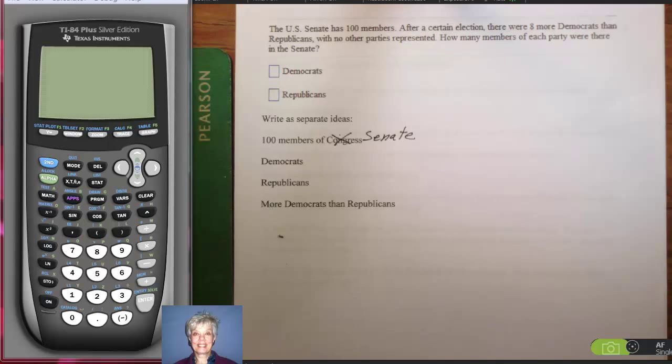And in this case there are more Democrats, eight more than Republicans, and that's how we set it up. 100 members all together and they're divided up into Democrats and Republicans and there are more Democrats than Republicans. That's the whole idea. And we want to know how many of each party there are. How many Democrats, how many Republicans.